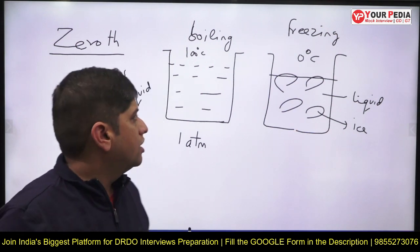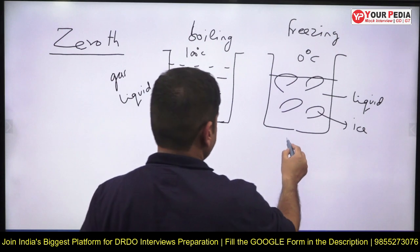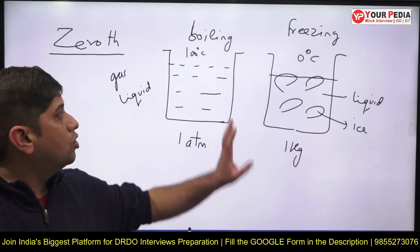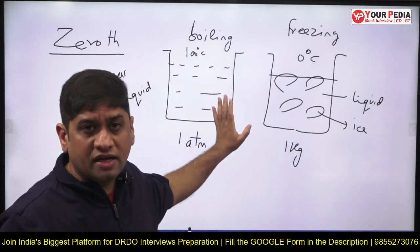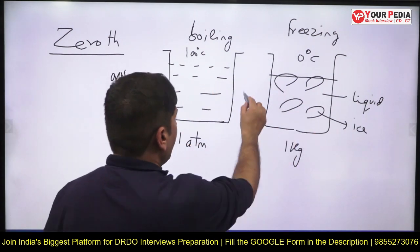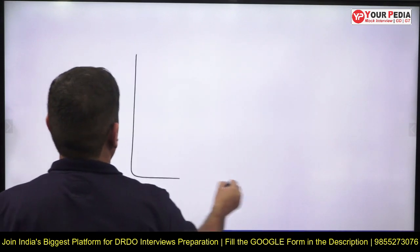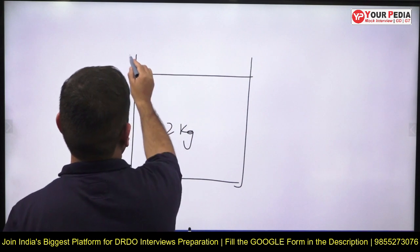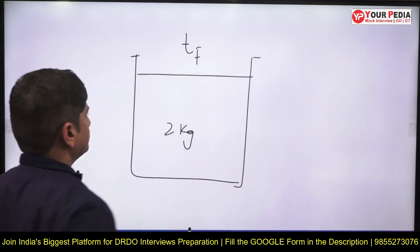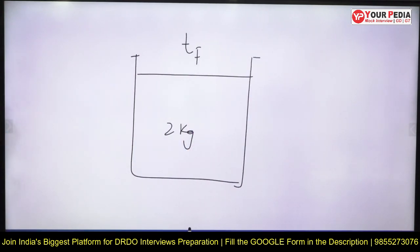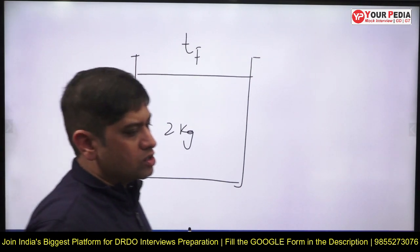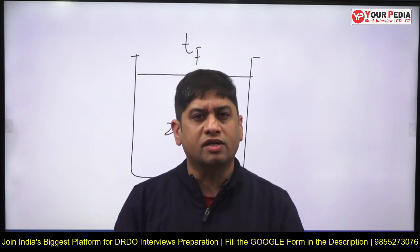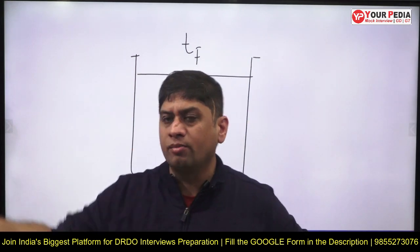Now comes the next question. I give you one kilogram of boiling water at 100 degrees centigrade and one kilogram of freezing water at 0 degrees centigrade. If I add these two — no doubt I get 2 kg — what will be the final temperature? What will be the final temperature if you add boiling water at 100°C with freezing water at 0°C?